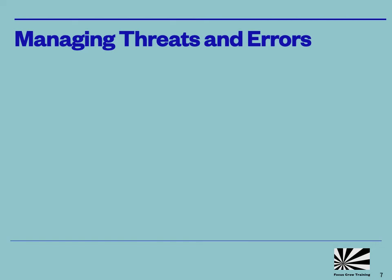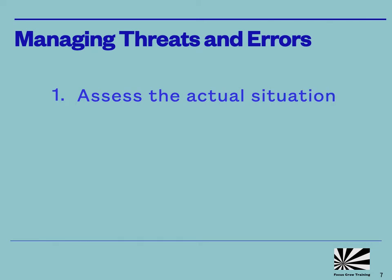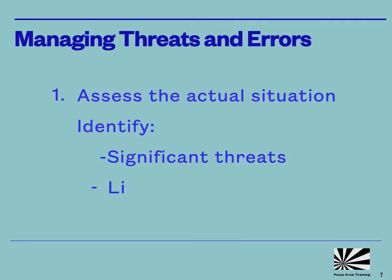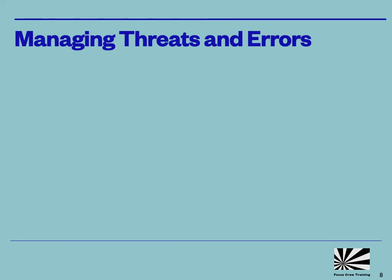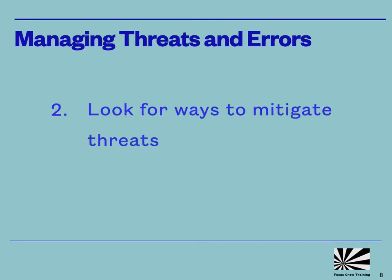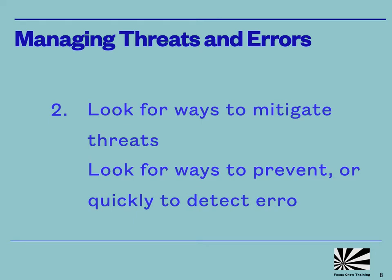So what can we do to manage threats and errors? There are two key things you need to do. The first is to look at the situation in front of you. Given the weather you have today, the particular helicopter you're in, the crew you're flying with, the location you're at and the mission you have, ask yourself what are the significant threats you can see and what are the most likely errors you could make in this situation. The second thing we have to do is to decide if there's anything we can do to mitigate the threats and if there's anything we can do to either prevent the errors or to detect and fix them quickly if we do make them.